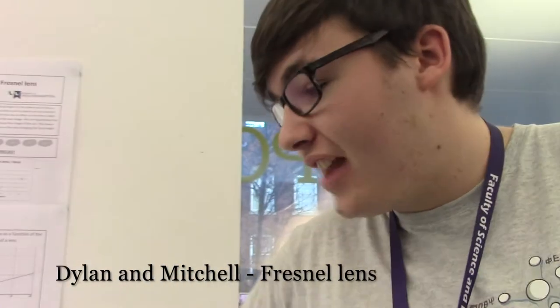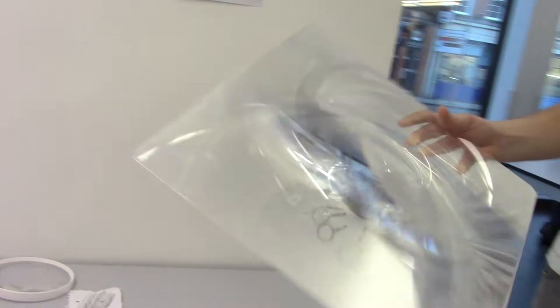Our experiment was comparing the energy transference of various lenses. We started with the Fresnel lens, which is a big thin lens made up of different concentric circles, which means it has a very large area but very short focal length.